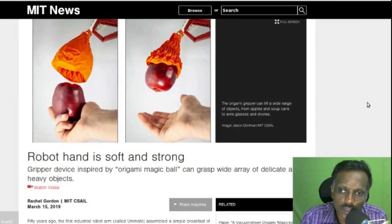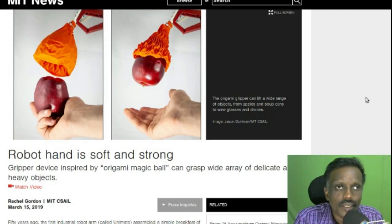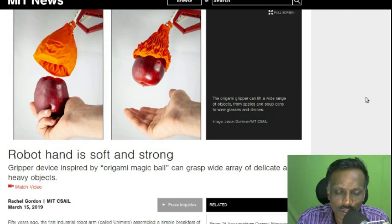Hello everyone. The researchers from MIT and Harvard University have developed a robotic gripper that is both soft and strong.